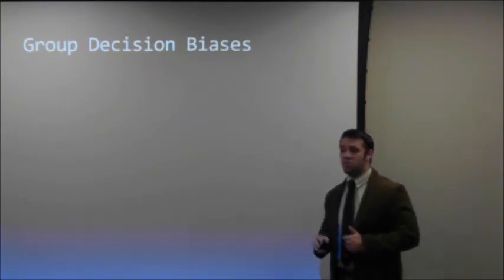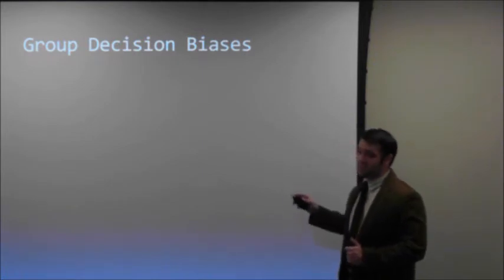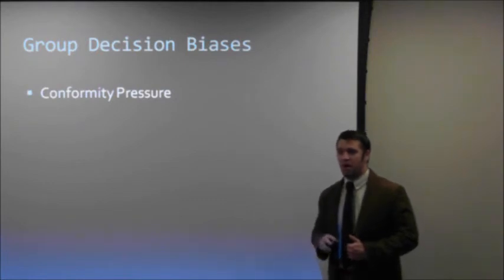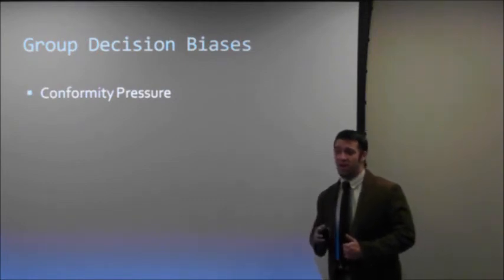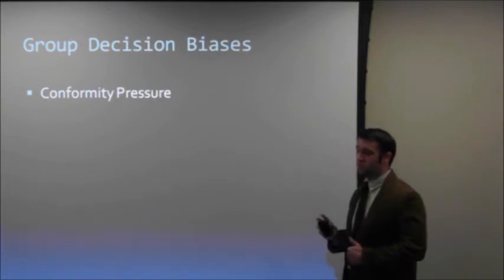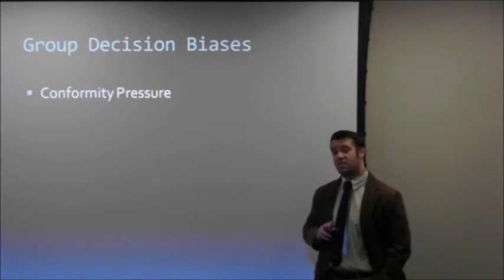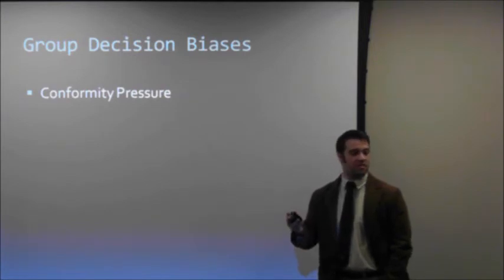What are some biases a group may have when making a decision? One bias that often presents itself: conformity pressure. When people want acceptance in a group, they try to figure out a way to get it. Unfortunately, this often leads to a trend in groups for people to be pressured to have a single, accepted view, and people with a contradictory view often get shut out or ostracized.